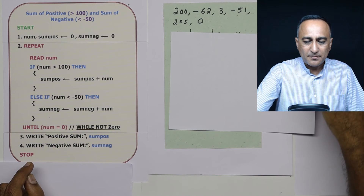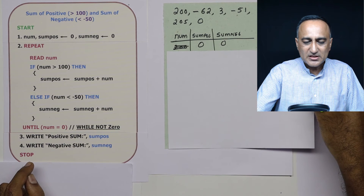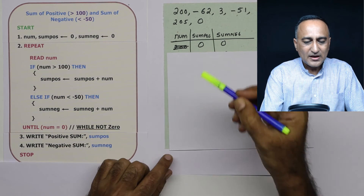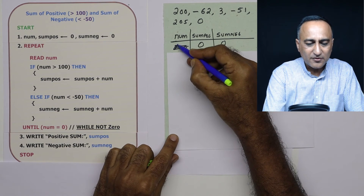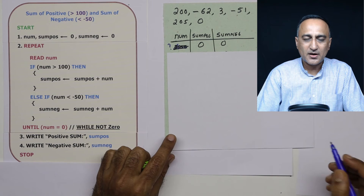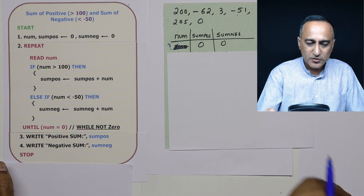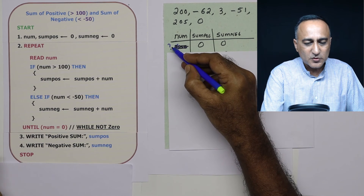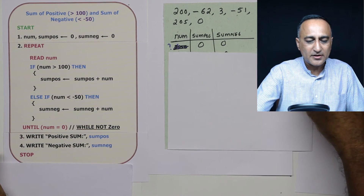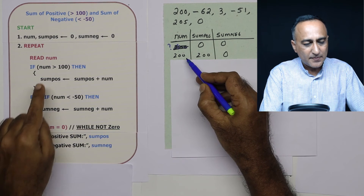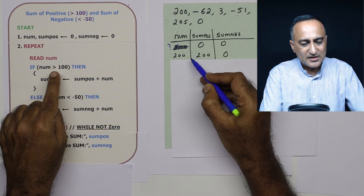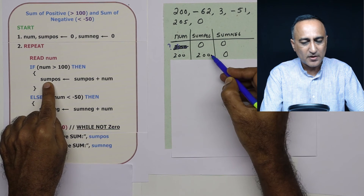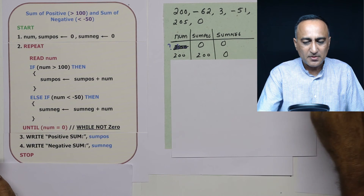Let's run through this program with some data. At step one, sum positive is zero and sum negative is zero. For 'number', no initial value is given, so it holds whatever the computer assigns — but that doesn't matter because when I read the number it will be replaced. I read 200. Since 200 is greater than 100, sum positive becomes zero plus 200, so sum positive is now 200. Sum negative remains zero.